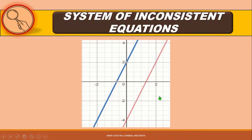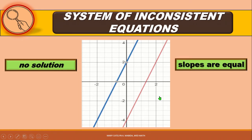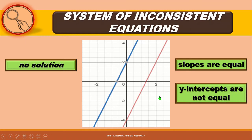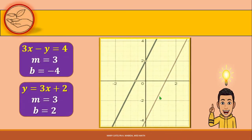A system that is inconsistent has no solution. The slopes of the lines defined by the equations are equal, but their y-intercepts are not equal, and their graphs are parallel. For example, the system 3x minus y equals 4 and y equals 3x plus 2 is inconsistent. The slopes of their lines are equal, which is 3, but their y-intercepts are not equal, and their graphs are parallel.